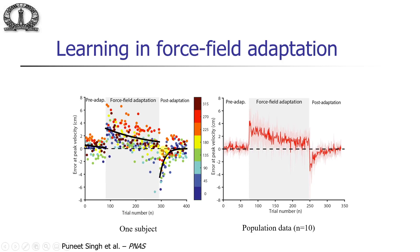We perform the same experiment with 10 subjects. The dark line shows the average exponential error for all 10 subjects across the pre-adaptation, force-field adaptation, and post-adaptation phases. The lighter colored lines show the variation across subjects.